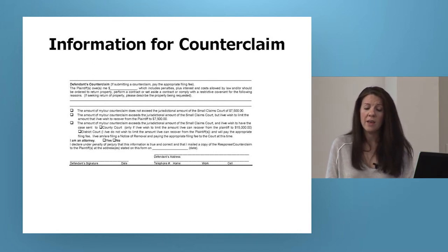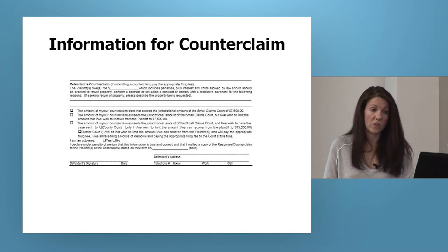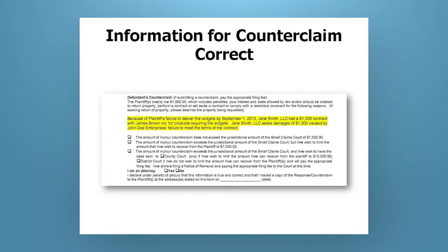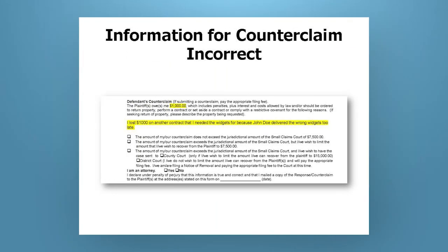There is a checkbox for whether you're an attorney, and you should note that you do not need to serve the answer and/or counterclaim, but you must assert that you mailed a copy to the plaintiff at the address provided in the complaint. Here are some samples of a correctly filled out counterclaim and an incorrectly filled out counterclaim. The correct one says: because of plaintiff's failure to deliver the widgets on time, Jane Smith LLC lost a contract with another company for products that required the widgets, and Jane Smith is seeking damages of $1,000 caused by John Doe's failure to meet the contract. The incorrect one just says: I lost $1,000 on another contract because I got the wrong widgets — there's not enough information and there are no dates.